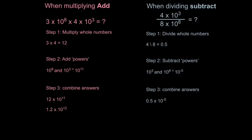Step 4. Combine the answers. So 0.5 times 10 to the minus 5. But once again, this number is below 1. It must be between 1 and 10. So we have to move the decimal place forward 1. So that becomes 5 times 10 to the power of minus 6.